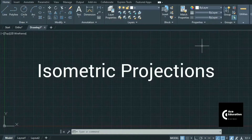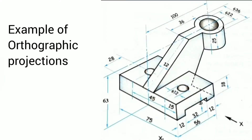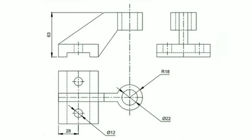Hello and welcome friends. In the last video we have seen how to draw orthographic projections when a three-dimensional object is given to us. We are supposed to draw its three views: the front view, top view, and side view. Once we draw all three views, giving the dimensions and completing all the hidden lines, we complete the orthographic projection.